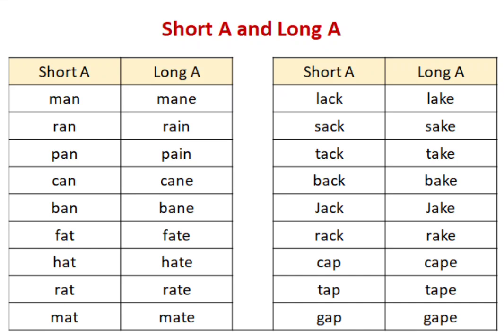Welcome back to our phonics series. As we have just done short A and long A, these are examples of how we can read them. Short A says 'a' — for example, M-A-N: man. While long A says 'ay' — M-A-I-N: main. Sometimes E is at the end, or A-I is there, which makes the A sound 'ay'; otherwise the A sound is always 'a'.